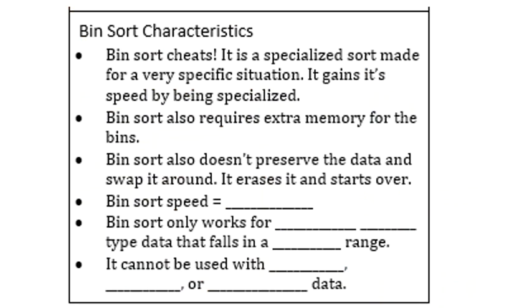So this is the card for bin sort. I really think of bin sort as cheating. We're not really sorting, we're kind of just erasing and starting over. But the other thing, the other way it cheats is that it's a very specialized sort for a very specific situation. It works really great if you have integers that fall in a small range. If you have anything else, frankly, you can't use bin sort. So the speed, you're getting the speed because it's so specific. We know so much about the array we're using, we're using that knowledge to help us go fast. Bin sort also requires a little bit of extra memory for the bins. It doesn't do any of this swapping. It just erases it and starts over. So depending on what you're moving around, that can actually be a problem.